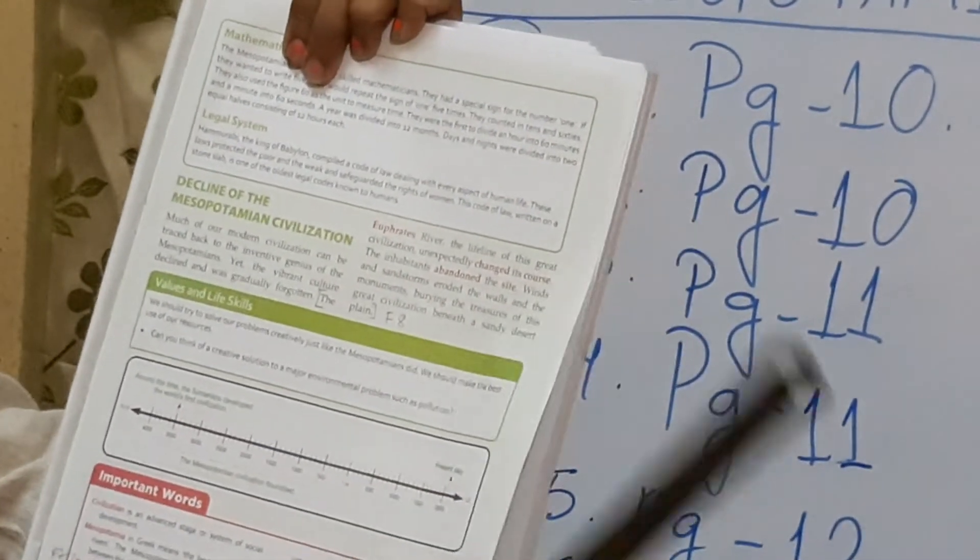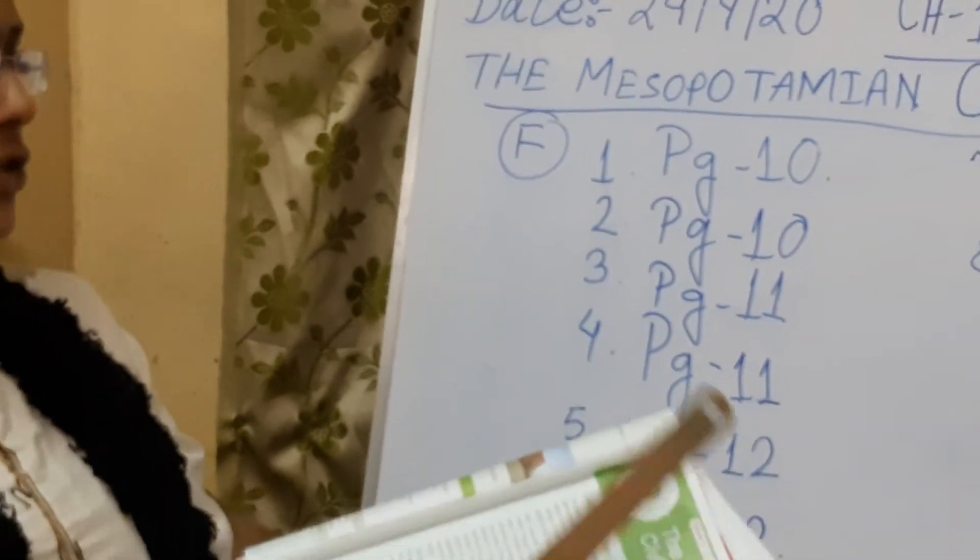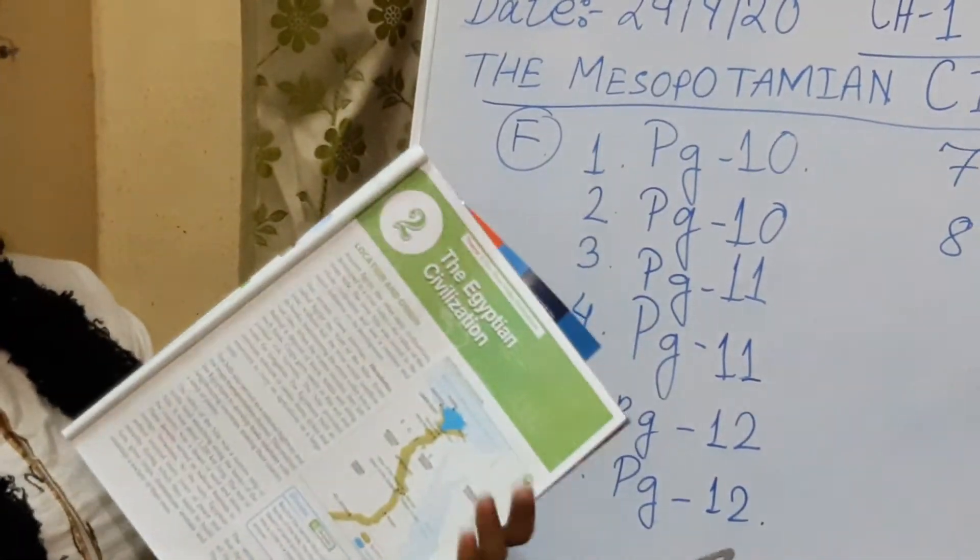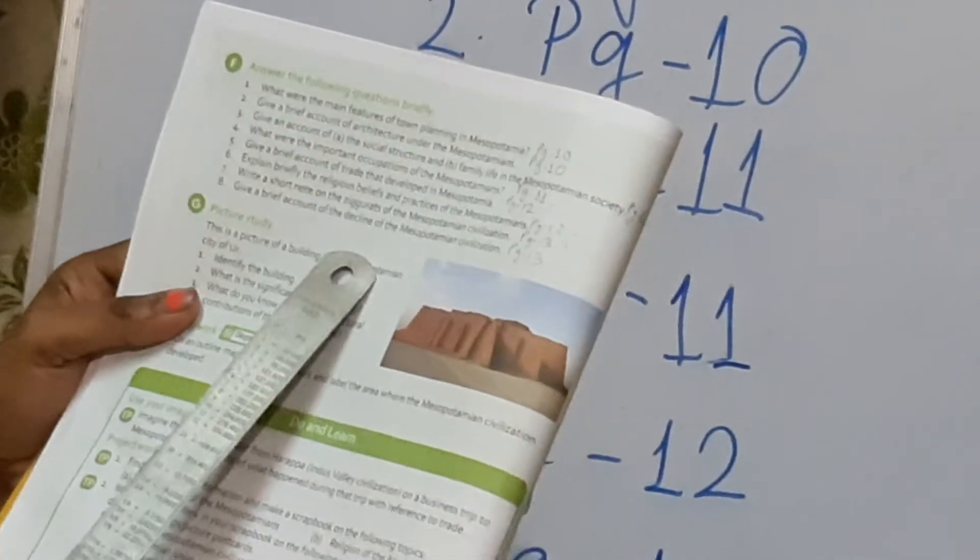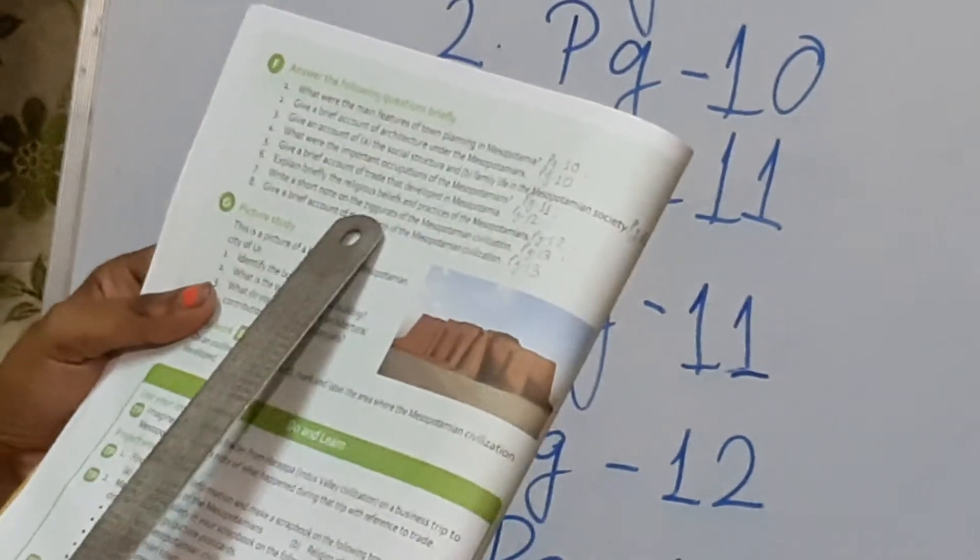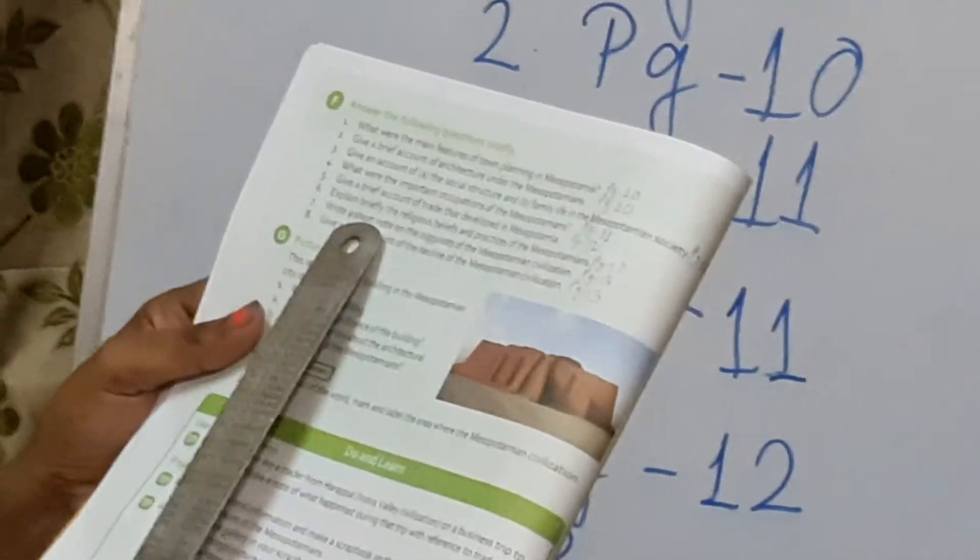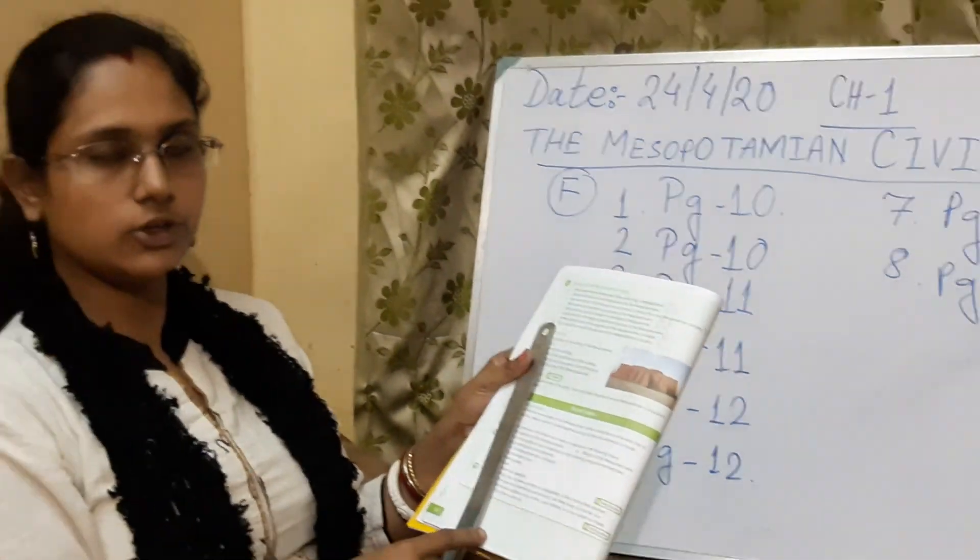So students, I think it is clear to you all the answers which I have shown you now. So from answer number 1 to answer number 8 under the F. Please write all the question and answers in your school copy. And if you have any problem then you can write in the comment box. Thank you.